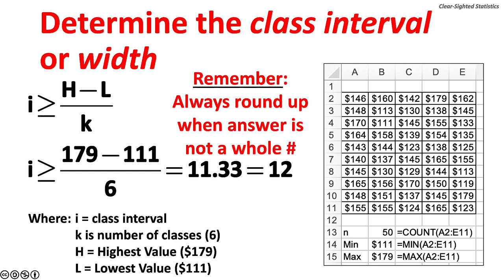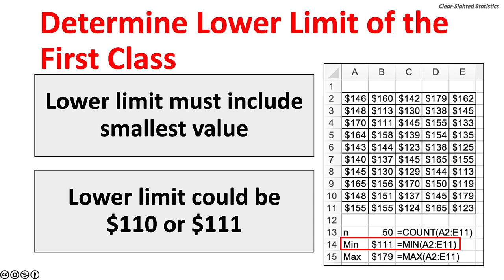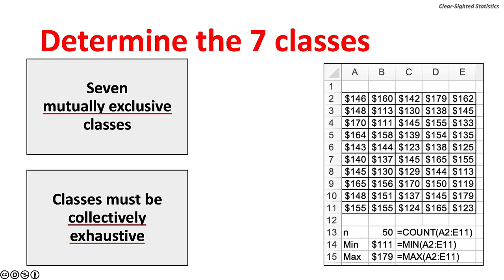What would happen if we used seven classes instead of six? Using seven classes would not violate the 2-to-the-k rule. Our class interval would be 9.17, which we would round up to 10. An interval of 10 is better than an interval of 12 because it is easier to count by 10. This is because our base-10 number system has made people used to counting by 10. Step 4: determine the lower limit of the first class. The lower limit must include the smallest value and could be 110 or 111. The classes must be mutually exclusive — they do not overlap — and collectively exhaustive, meaning each of the 50 observations fits into one class. There should not be any gaps between the classes.